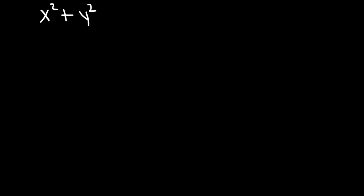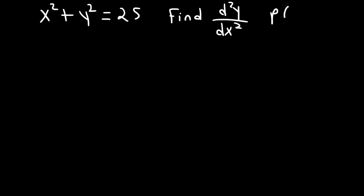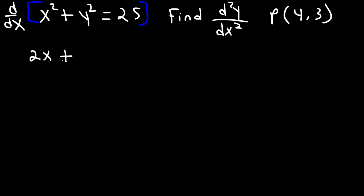Now let's work on one more problem. Let's say we have the equation x squared plus y squared is equal to 25. Our goal is to find the second derivative, d squared y over dx squared, and evaluate it at the point (4, 3). So just like before, we're going to use implicit differentiation — differentiate both sides with respect to x. The derivative of x squared is 2x. The derivative of y squared with respect to x is 2y times dy over dx. And the derivative of 25 is 0.